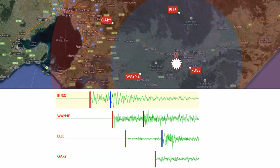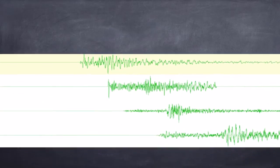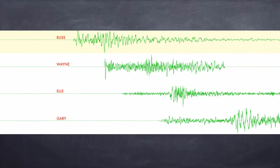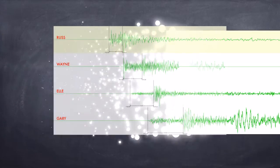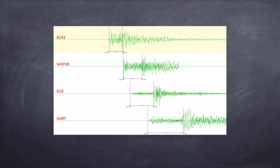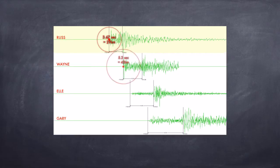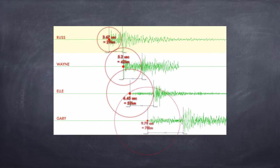Seismologists are then left with these traces to work out where the earthquake was. What they need to do is pick those P and S times from those waveforms. Here we've done that — we've marked the P and the S time, and that correlates to a distance from that seismograph to the earthquake. The Rust station was 29 kilometres from the earthquake, Wayne 42, L 52, and Garage 78.